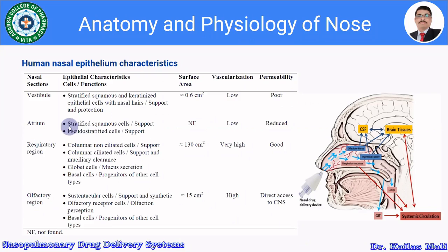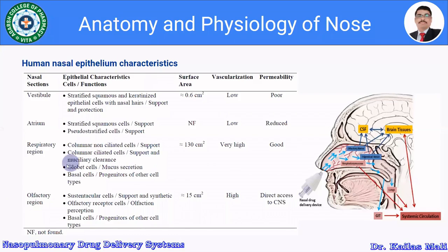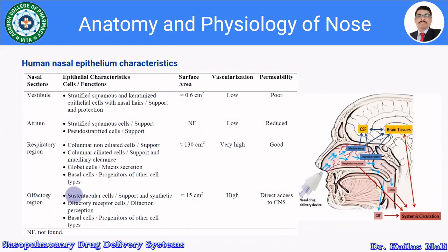The atrium comprises stratified squamous cells and pseudostratified cells for support. The surface area is not reported, vascularization is low, and permeability is reduced. In the respiratory region, the columnar non-ciliated cells and columnar ciliated cells provide support and mucociliary clearance, goblet cells provide mucous secretion, and basal cells are progenitors of other cell types. The surface area of the respiratory region is approximately 130 centimeter square, vascularization is very high, and drug permeability is good.